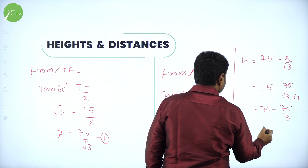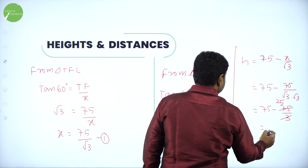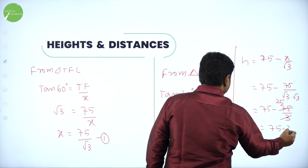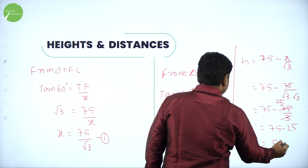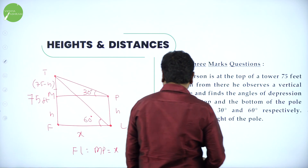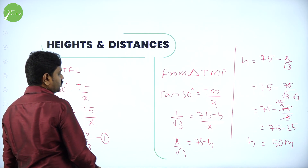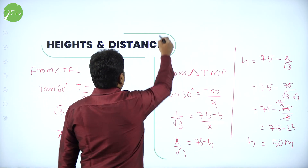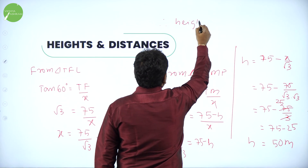Substituting x equals 75 over root 3: H equals 75 minus (75 over root 3) divided by root 3 equals 75 minus 75 over 3 equals 75 minus 25 equals 50 feet. Therefore the height of the pole PL is 50 feet.